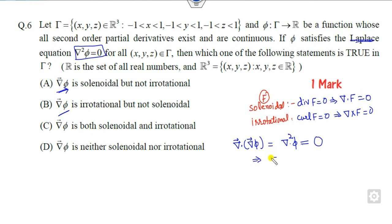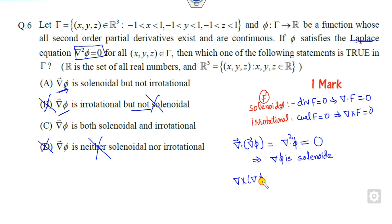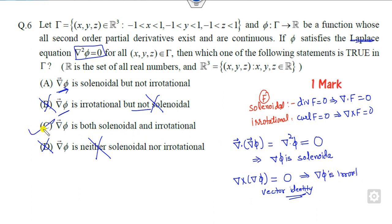So what is the meaning of that? It means this is solenoidal. Therefore, options B and D are cancelled out. For irrotational, you check the curl, and since the curl of the gradient of a scalar is 0 — that is the standard vector identity — it means the field is irrotational also. So both conditions hold, and the right answer is that it is both solenoidal and irrotational.